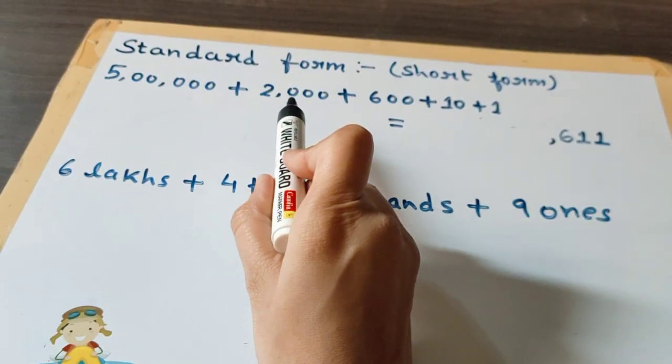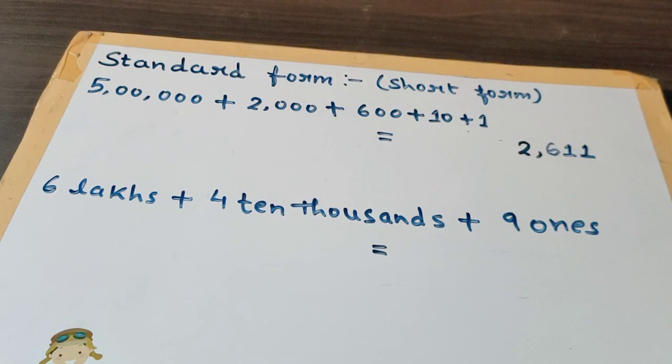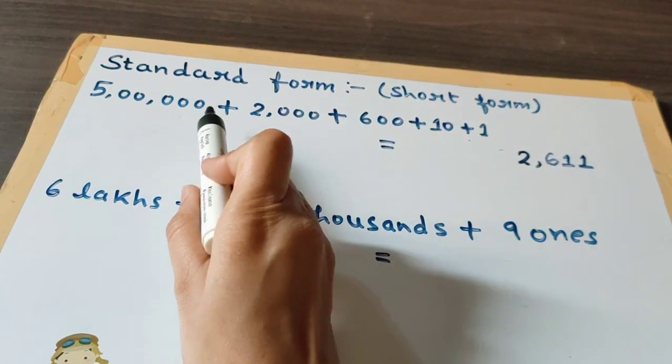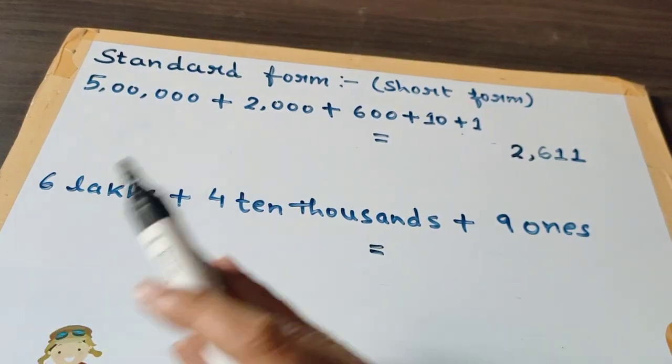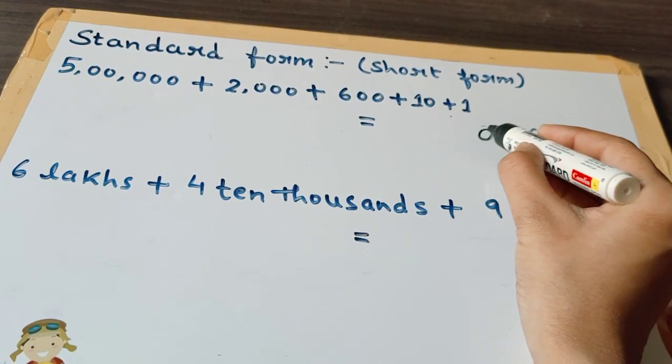At the thousands place there is 2, so we will write 2. At the ten thousands place there is no number, so we will put a 0.